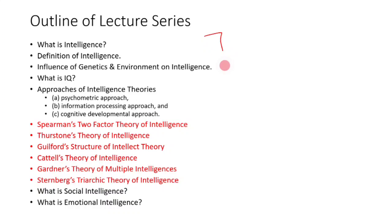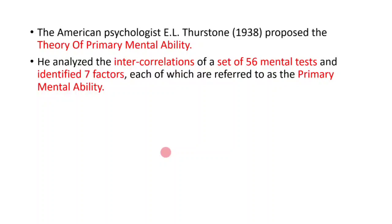What are the 7 factors that Thurston gave us? All of the lectures are available in our app; the link is in the description. American Psychologist Thurston proposed the theory of primary mental abilities.